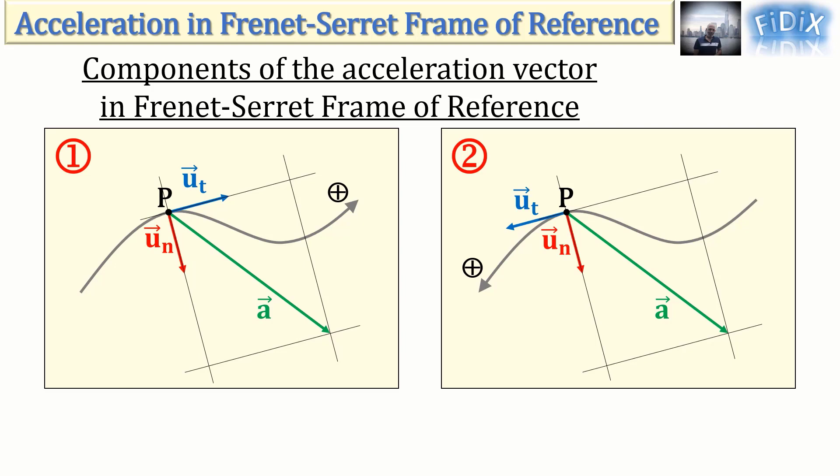We get a parallelogram having a right angle since u_t and u_n are always perpendicular. This parallelogram is a rectangle of diagonal a and of consecutive sides: the tangential vector component a_t and the normal vector component a_n.